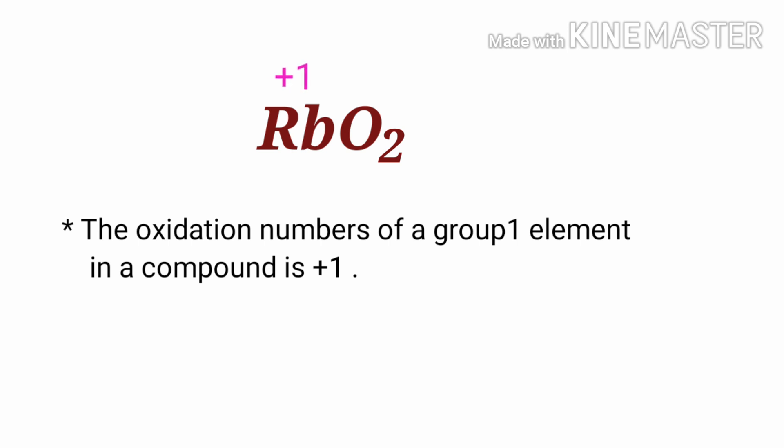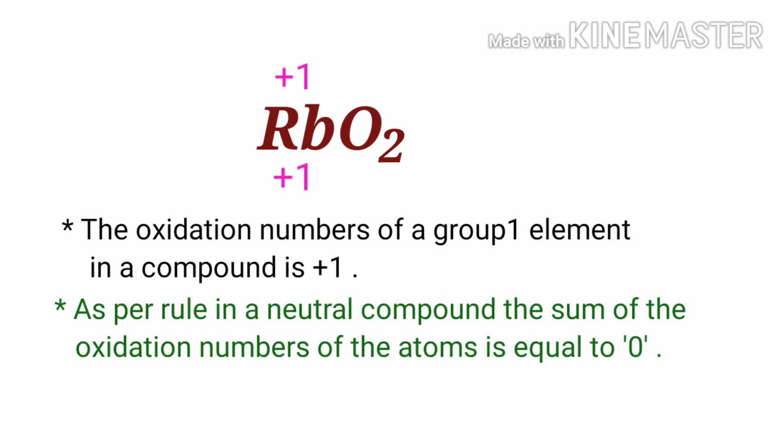We can write the oxidation number of the element above its symbol and the total oxidation number of the atoms below its symbol. As per rule, in a neutral compound, the sum of the oxidation numbers of the atoms is equal to 0, so the numbers along the bottom must add up to 0.